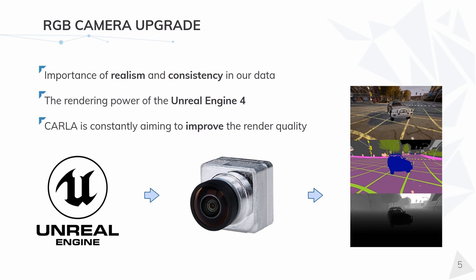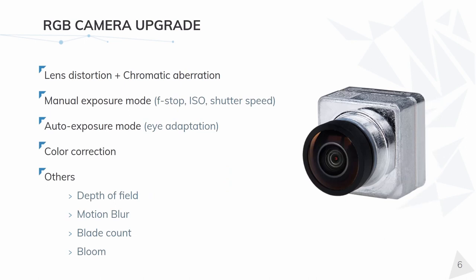The new camera supports several useful features such as lens distortion, different exposure modes, and depth of field. All of this takes advantage of Unreal Engine capabilities to ensure maximum integration with the engine so we can achieve good performance. We are adding new features like noise functions and chromatic aberration, but keeping in sync with the Unreal cameras and their parameters, so we can evolve with it and maybe in the future use ray tracing or any new rendering technology that Unreal can provide. I will briefly talk about distortion, exposure modes, and color correction.